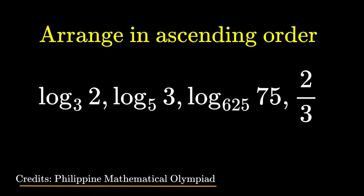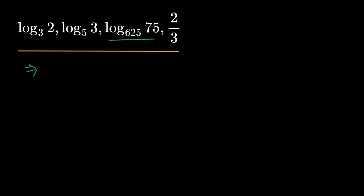Alright, so we take a look at the four numbers. The two-thirds is okay, but the rest of the numbers — we don't really know their values unless we know values like log 2, log 3, log 5, and those aren't really well-known values. So we want to do some manipulation using properties of logarithms. There's something interesting: the third term, log 75 with base 625 — 75 is 5 squared times 3, and 625 is 5 to the 4th. So we have something to do with 5s and 3s.